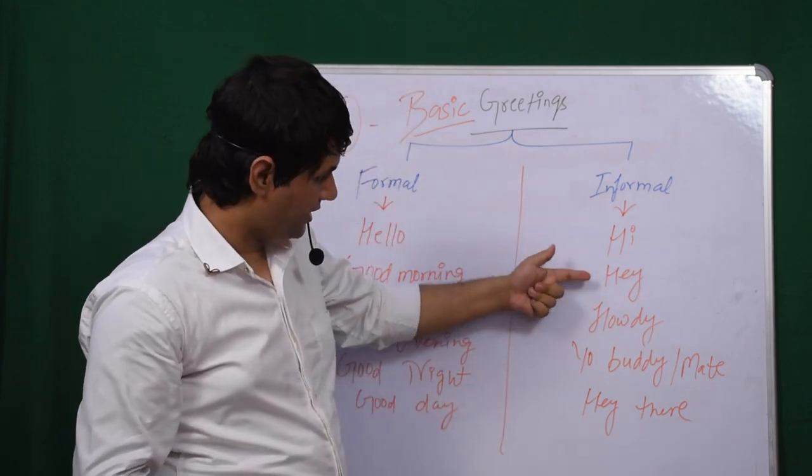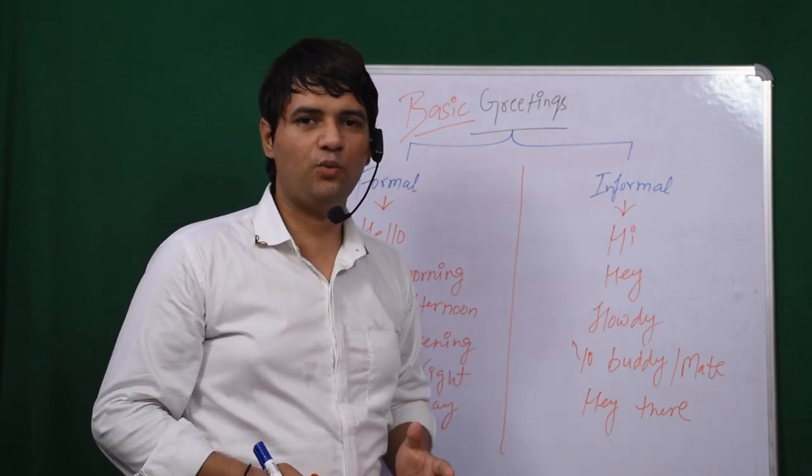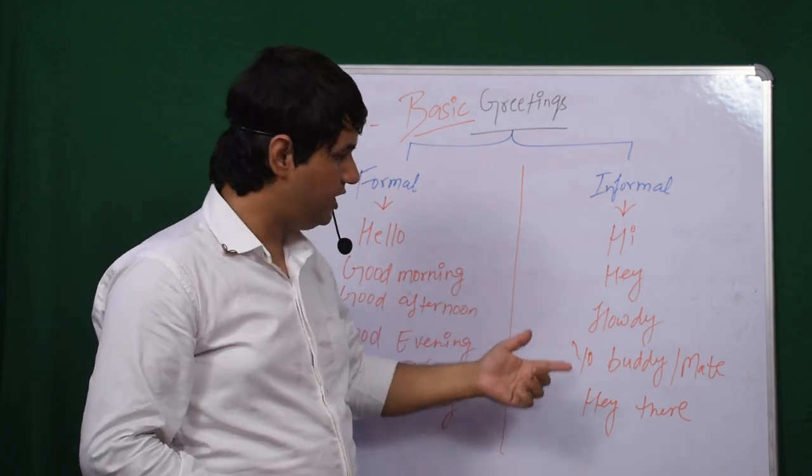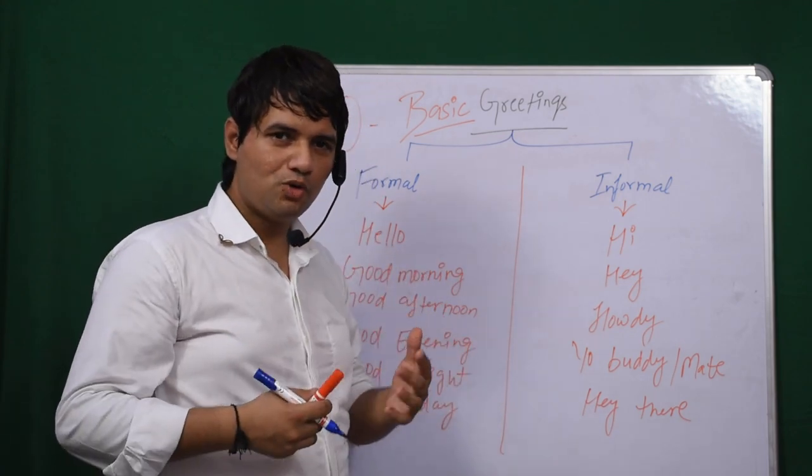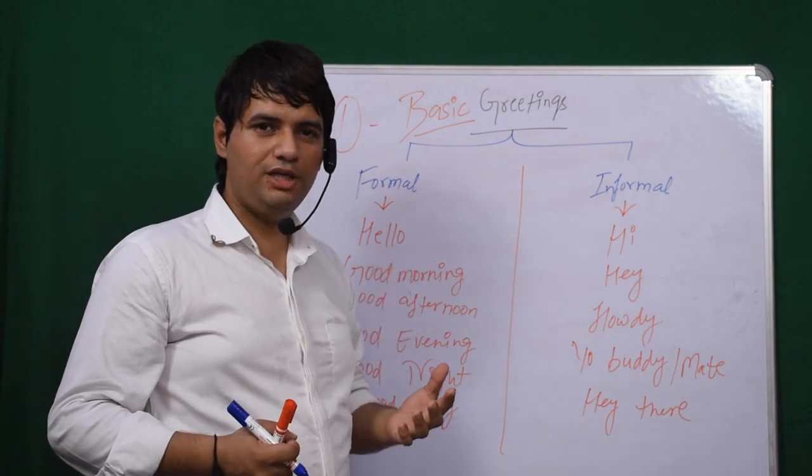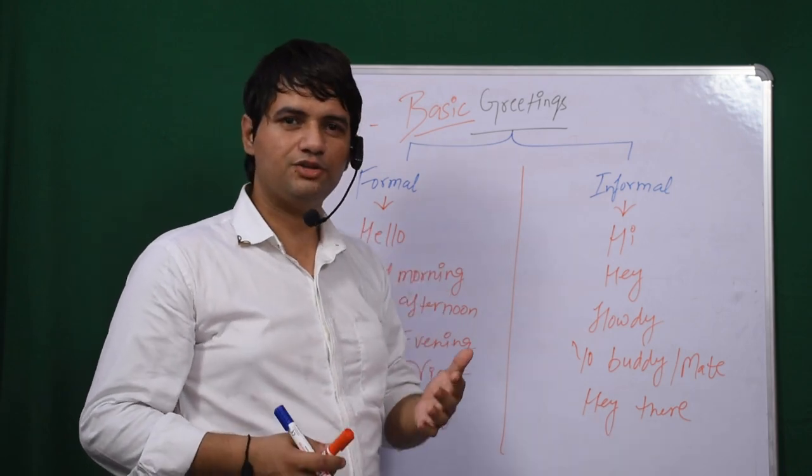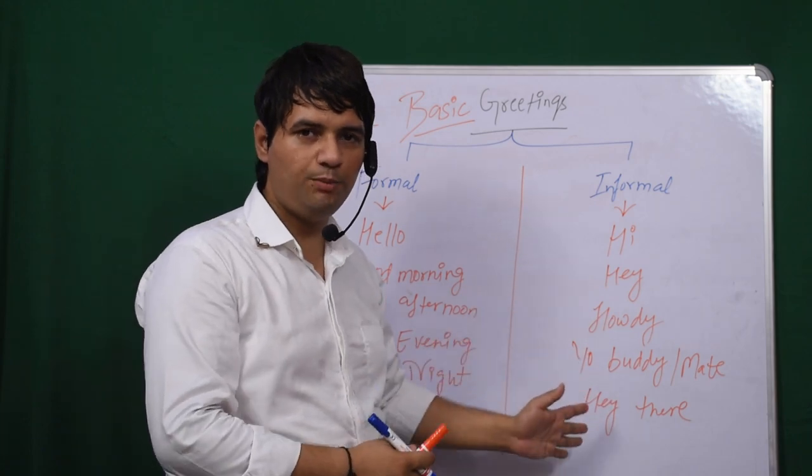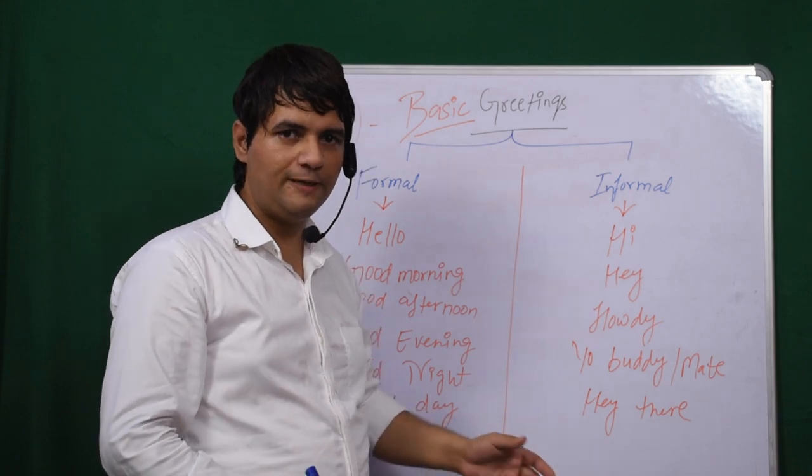These are the informal greetings: hi, hey, howdy, your buddy, your mate, hey there. So these are the ways by which people generally greet each other. Howdy, hey there, your buddy—these are kind of cool greetings. Generally youngsters use them with their friends, family, their colleagues, when they are in school or meeting any of their siblings, their cousins. Generally in informal way we use it with the people who are known to us, we are very well acquainted with those people.